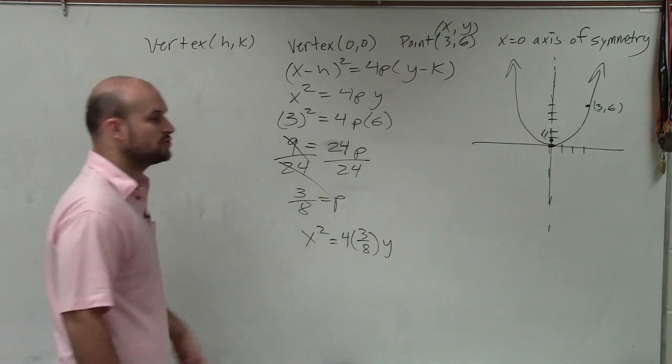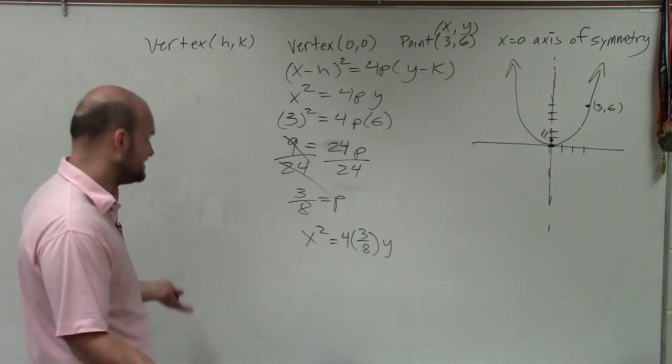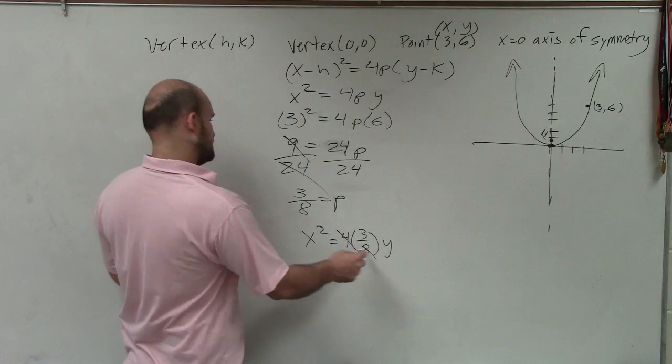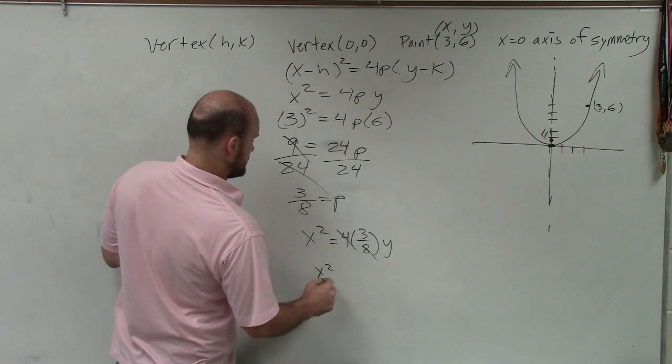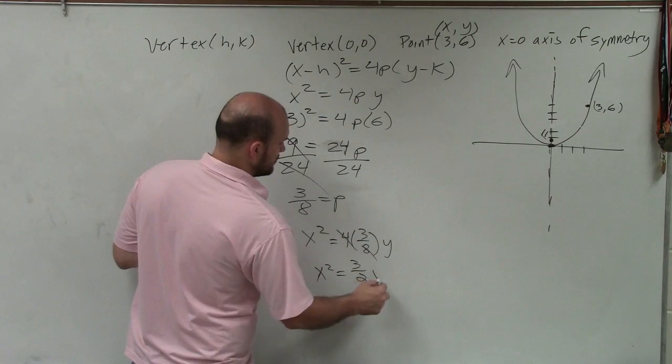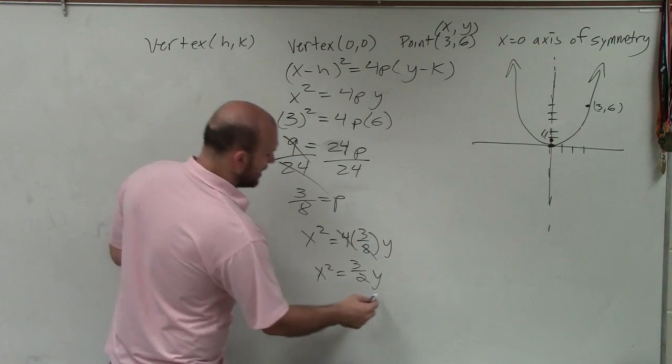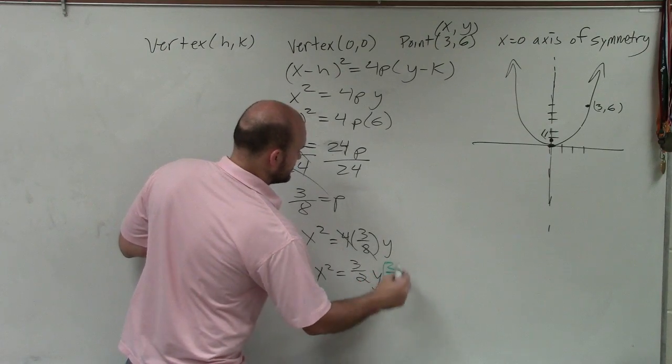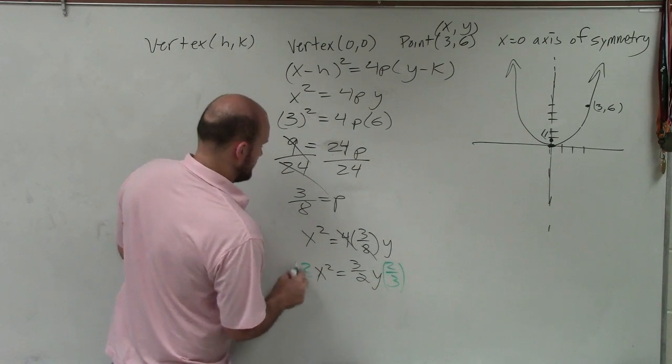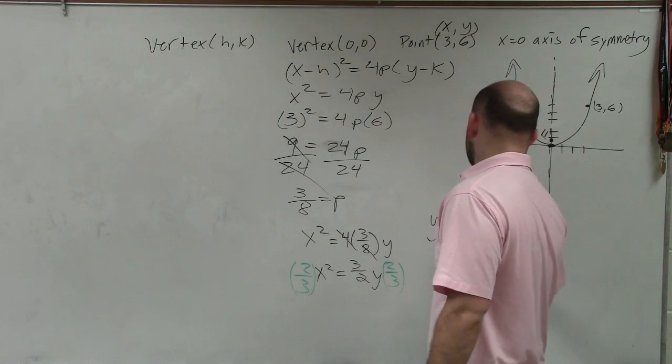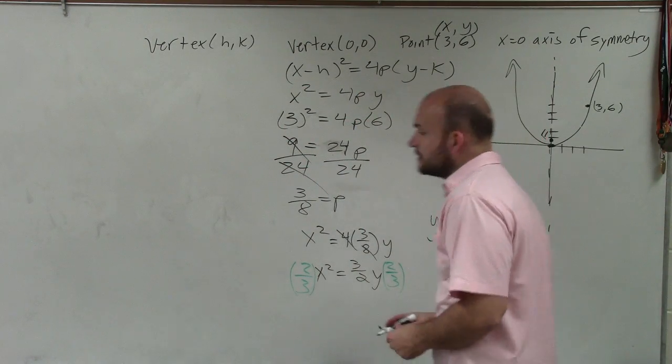Well, 4 times 3 is 12, 12 divided by 8 does not reduce, but you could simplify this, actually, so that'd be 2. So x squared equals 3 halves y. Then to solve for y, I will multiply by the reciprocal, 2 thirds on both sides. And therefore my final equation is y equals 2 thirds x squared.